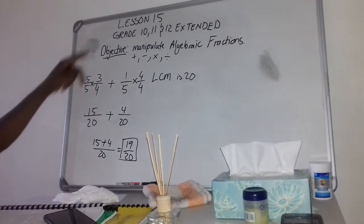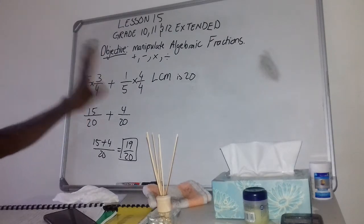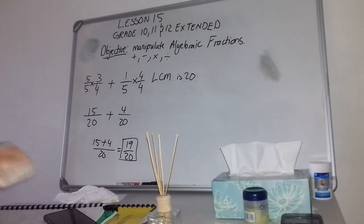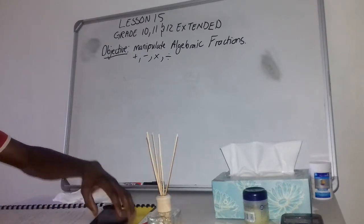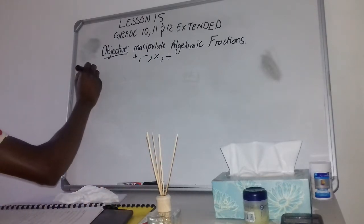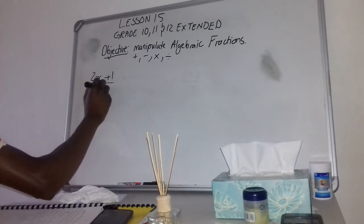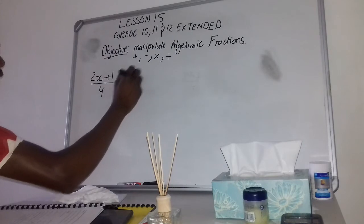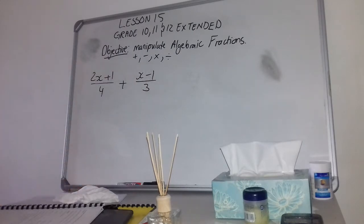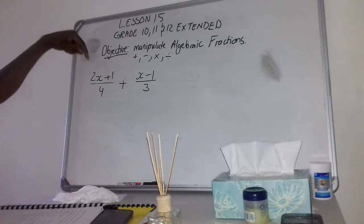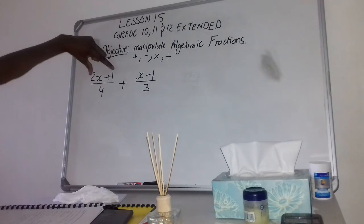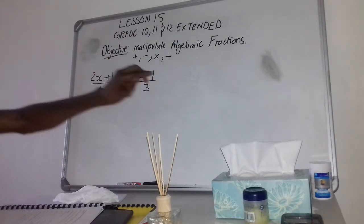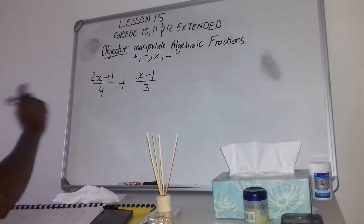If you can remember this, you are just going to cruise when you start doing the algebra work. Let's look at the first example. You are given (2x + 1)/4 plus (x - 1)/3, and the instruction is to write this as a single fraction. As you can see, there are unknown expressions on top, which is why we call them algebraic fractions. The lowest common multiple of 4 and 3 is 12.